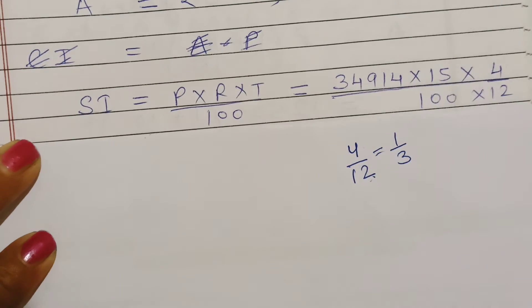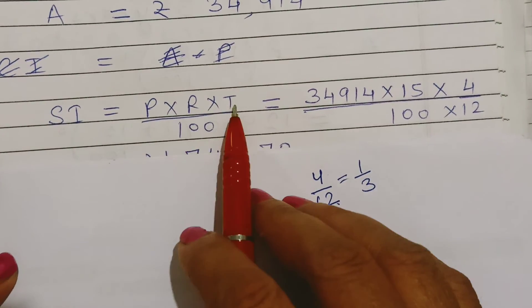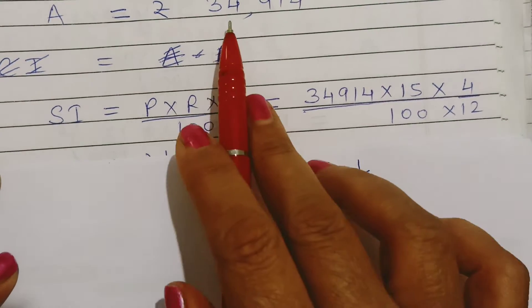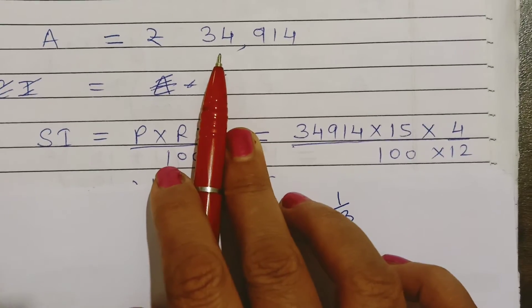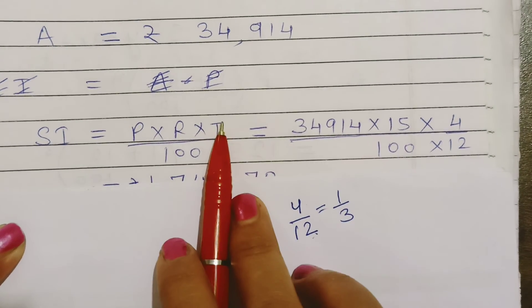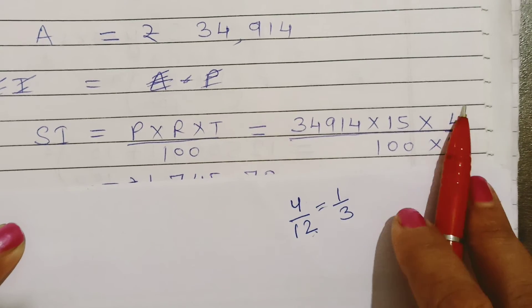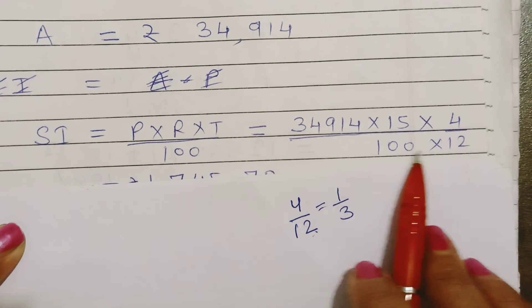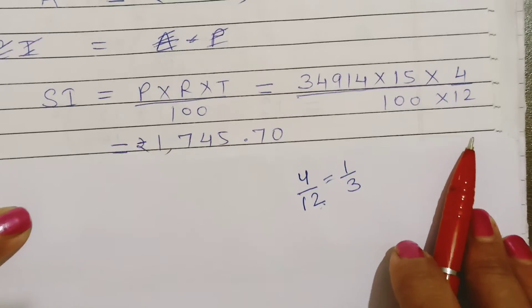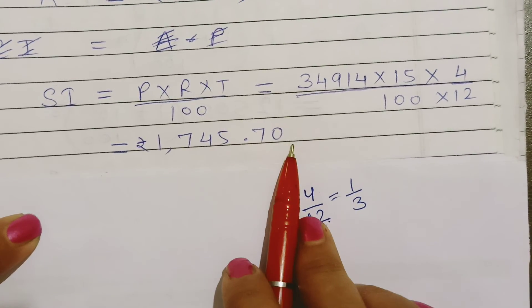तो अब हम simple interest find out करेंगे। Simple Interest = (P × R × T) / 100। P की value होगी जो अभी amount में मिली थी — ₹34,914। R की value 15 है, और T की value 4/12 है (4 months बचे हैं)। Solve करने के बाद answer आया: ₹1745.70।